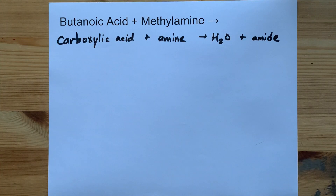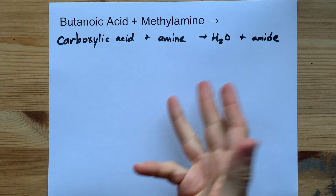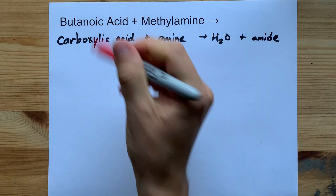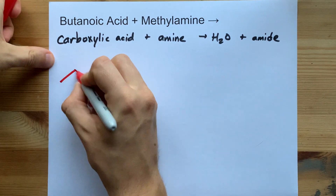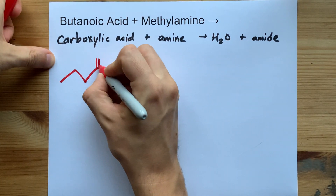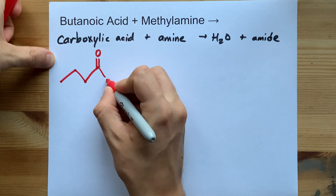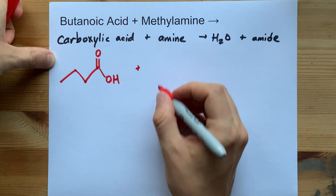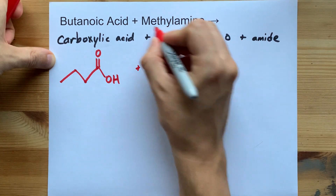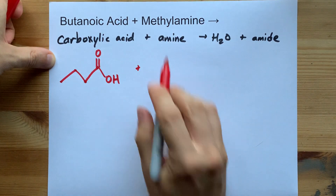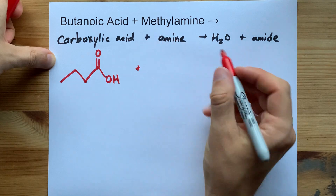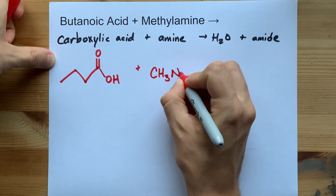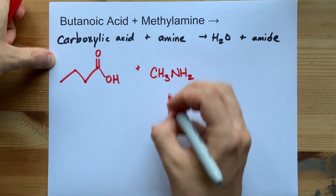An amide is similar to an ester, except the single bond at O is replaced with an N. Let's draw these out. Butanoic acid is a 4-carbon long chain, and the acid is the double bonded O and the OH together. The amine is NH3 with one of those H's replaced with a methyl group, so CH3-NH2.